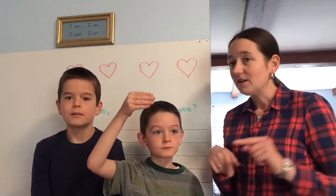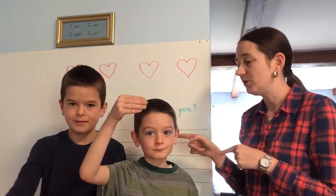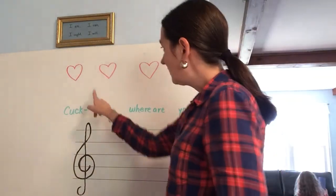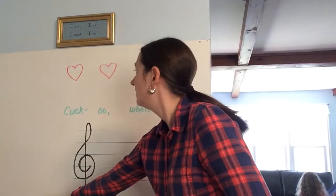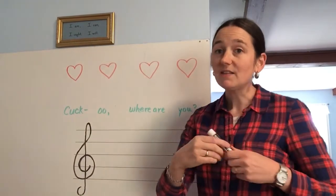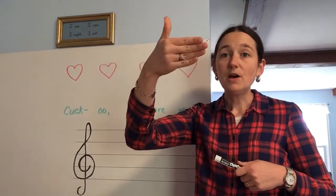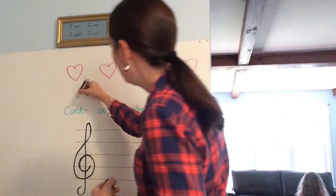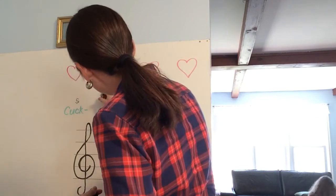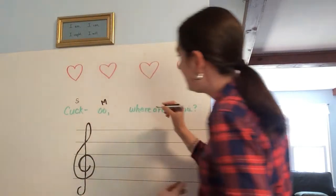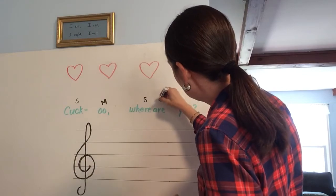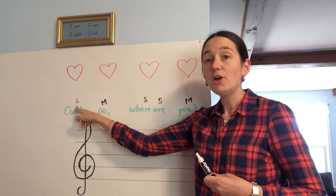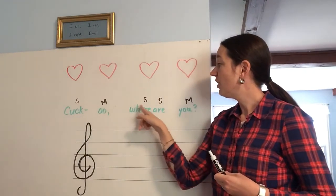I'm going to have Jack and Thomas go sit at the table and they're going to help me know what to put on the board. They showed me with the hand signs that we have so, me, so, so, me. I'm just going to write a little S for the so and an M for the me. So we have right here: so, me, so, so, me.